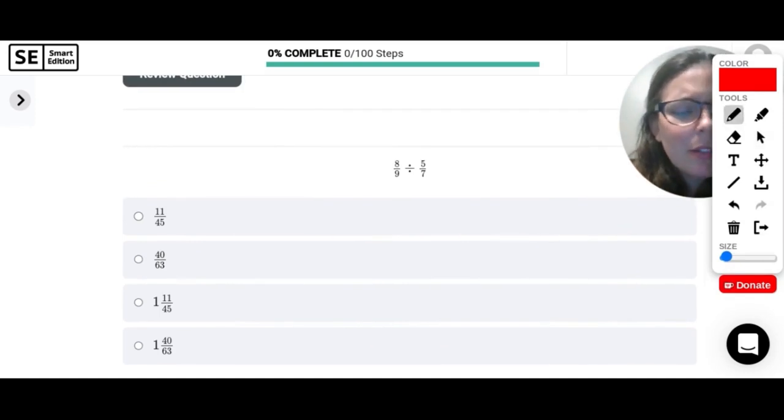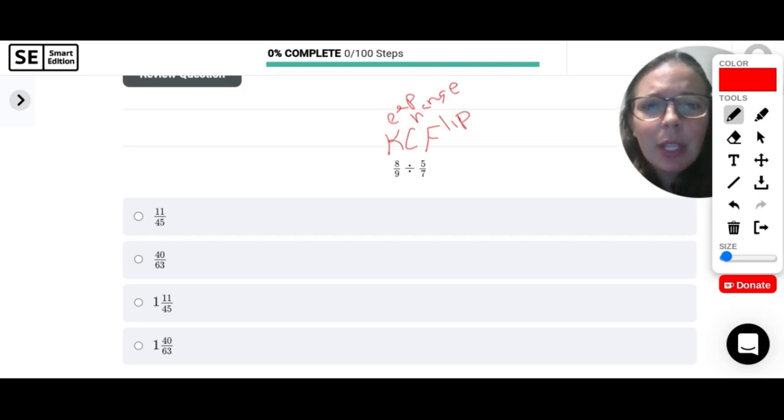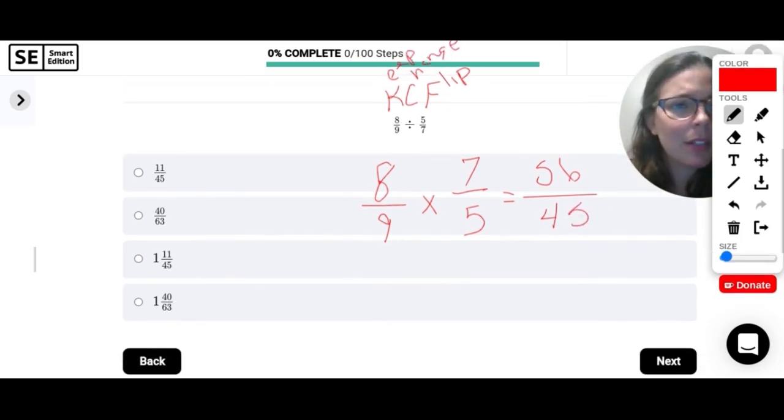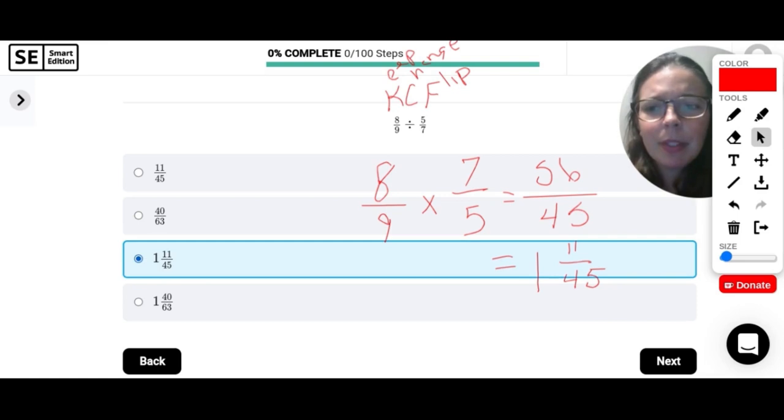Dividing fractions. So when we divide fractions, I want you to think, or at least this is what helps me, I want you to think of fried chicken. Instead of KFC, though, it's KCF. So what this means is keep, change, flip. So that looks like keeping your first fraction, 8 over 9, changing division to multiplication, and flipping the second one. So 5 sevenths, flip it to be 7 fifths. And then from here, now we can just multiply. So we just multiply across the top and across the bottom. And it looks like we need to turn this into a mixed number. So 45 goes into 56 once. And that would have 11 left over. So 1 and 11 forty-fifths.